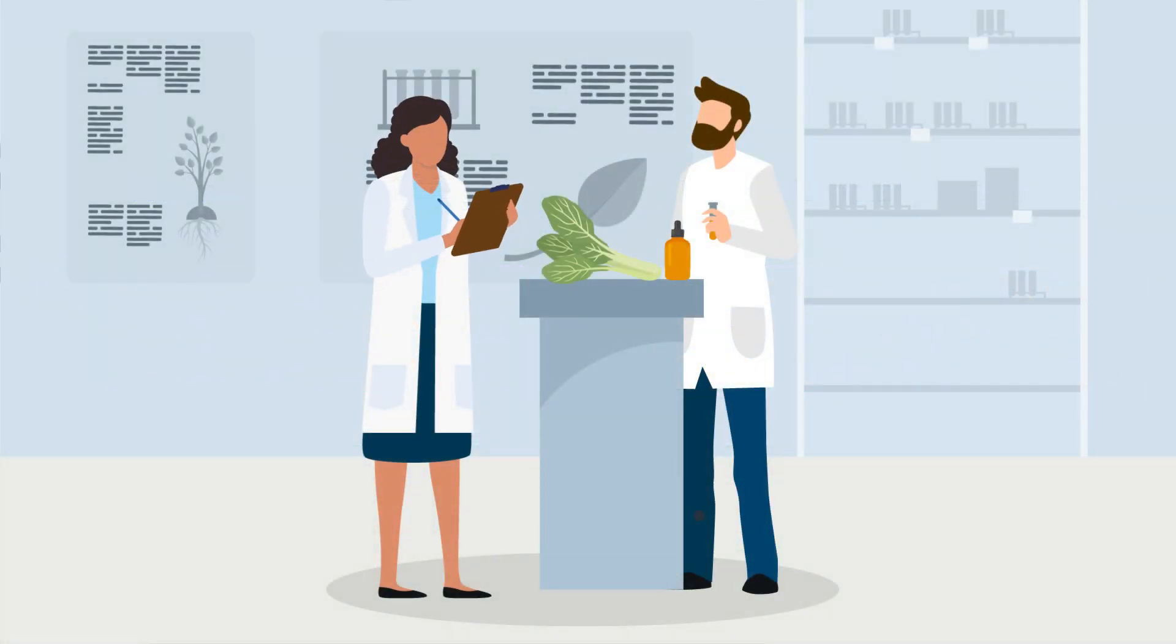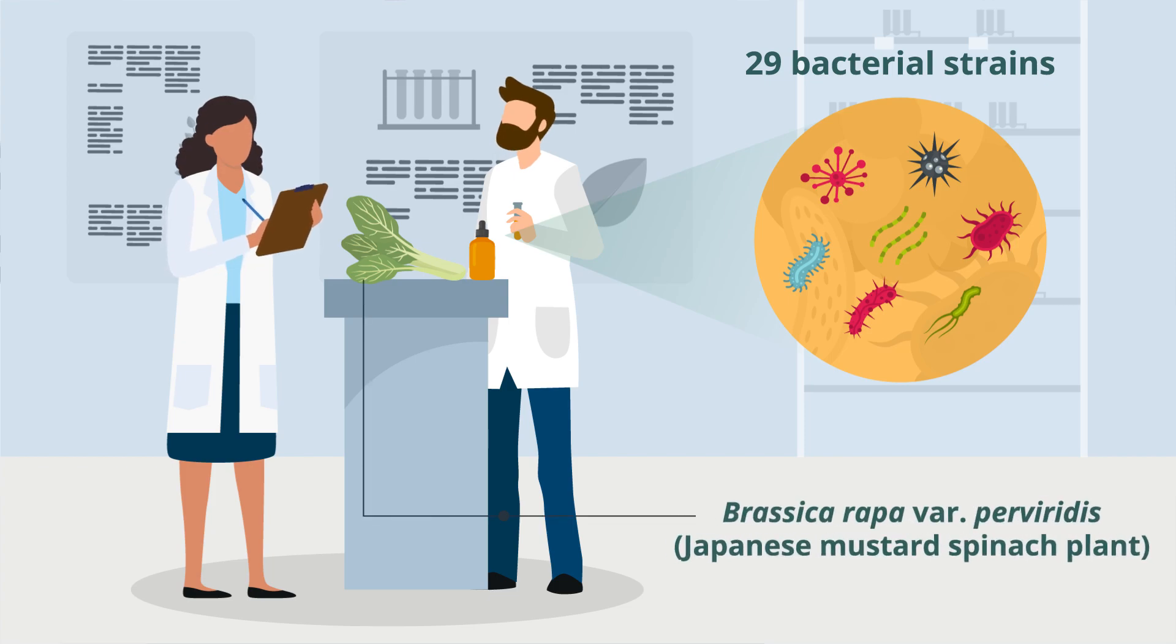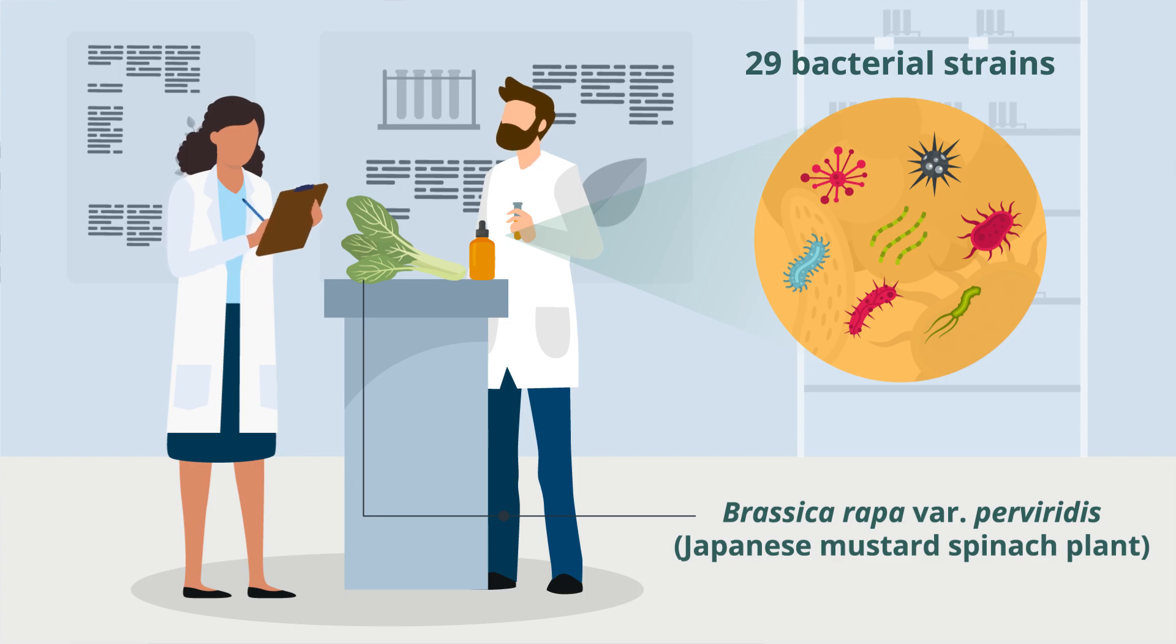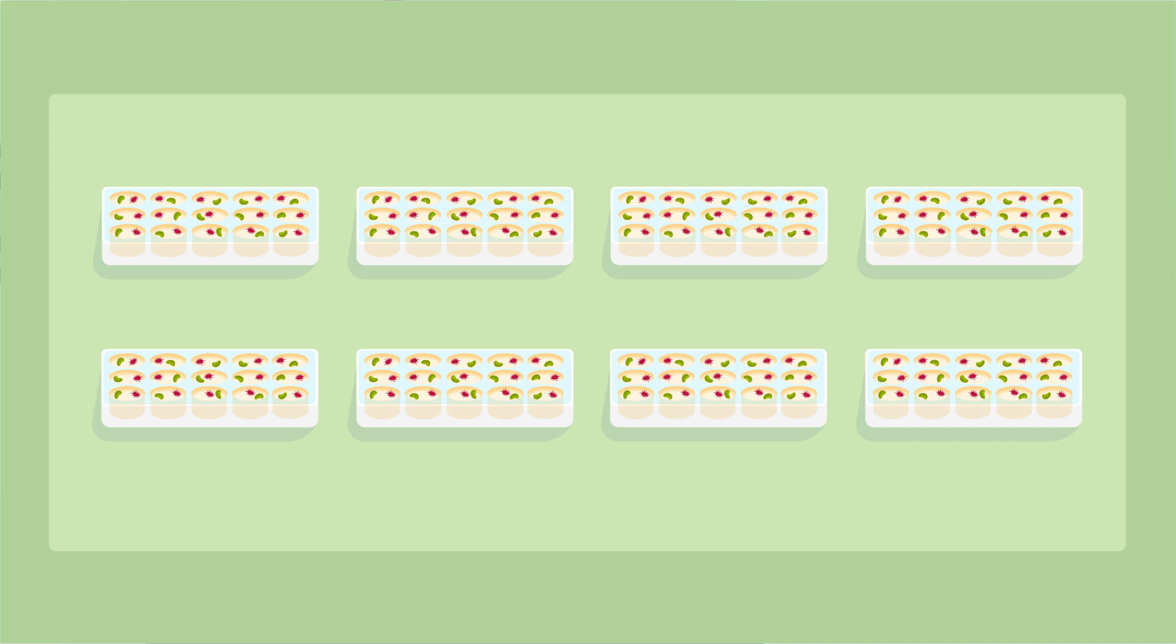The team used their method to screen 29 bacterial strains isolated from Brassica rapa var proveridus, commonly known as the Japanese mustard spinach plant. The results showed that eight bacterial strains boosted the BY-2 cells' immune response to cryptogene.